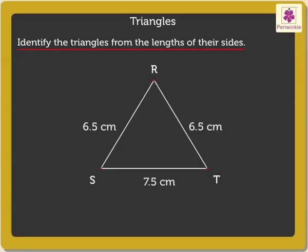Lastly, in triangle RST, the lengths of its two sides, RS and RT, are 6.5 cm each, and that of the third side is 7.5 cm. Thus, it is an isosceles triangle.